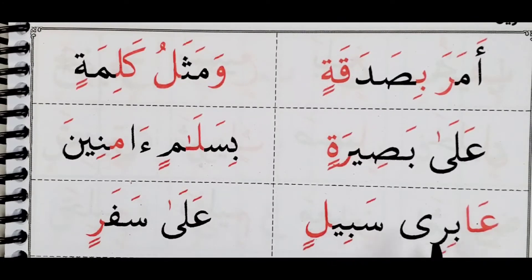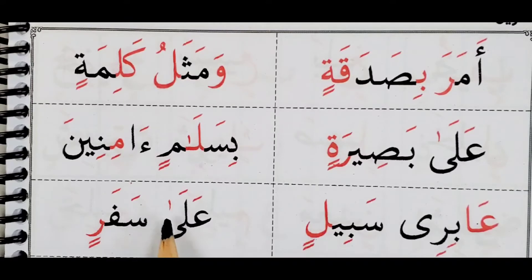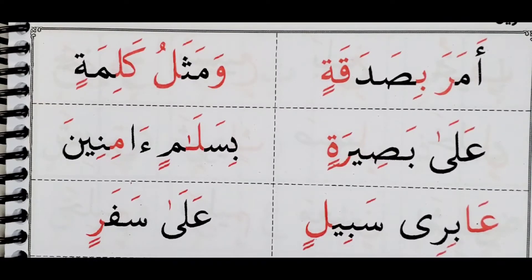Sabilin, abiri sabilin. Ala safarin — look at the alif soghira here. Ala safarin. Ma kana libasarin.